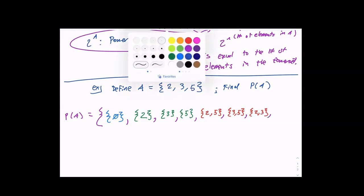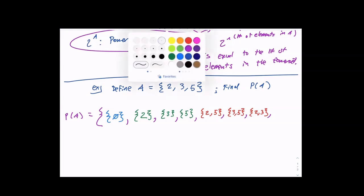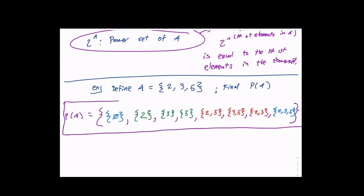The set itself is always a subset, so the first set should always be the null set and the last set should be the original set. Give me a set of three elements that is a subset of A — that would be {2, 3, 5}. And that is the power set.